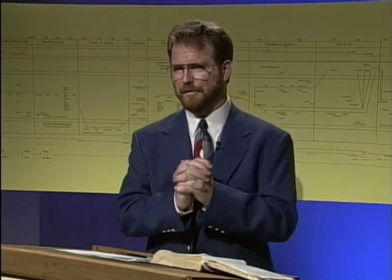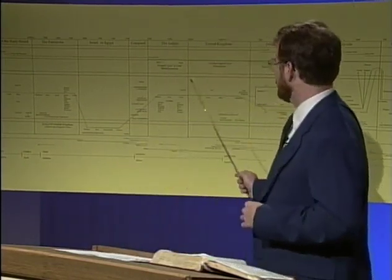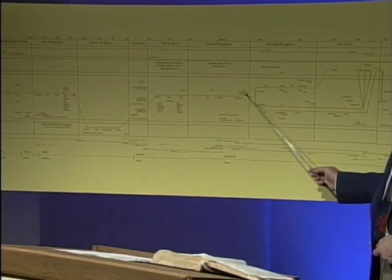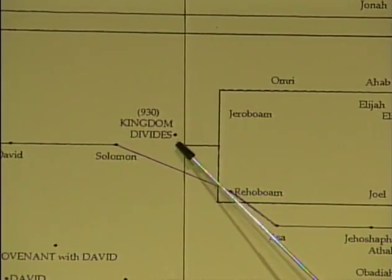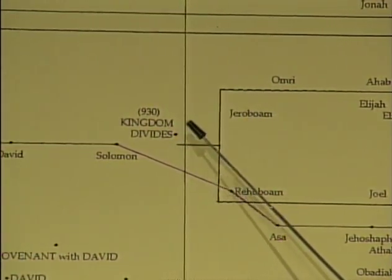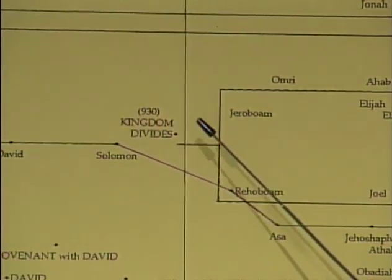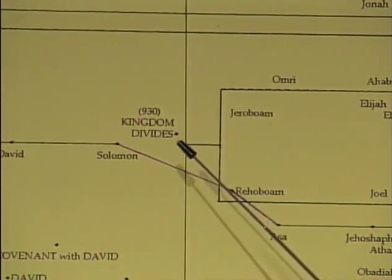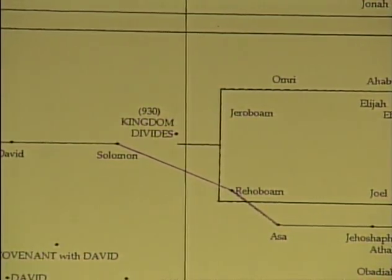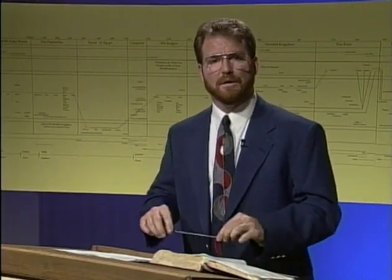This is so critical — 1 Kings chapter 12 is a major watershed event in the history of the Bible. In 1 Kings chapter 12, the year is 930 BC. We have the standoff between Jeroboam and Rehoboam. Rehoboam, son of Solomon, would not give in — he was going to be just as harsh as his father, and harsher. At this point in 930 BC, the kingdom divided.